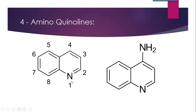According to the numbering rule, numbering starts from the heteroatom in an anti-clockwise direction: 1, 2, 3, 4, 5, 6, 7, 8. The name says '4-amino', meaning that at the fourth position of the quinoline ring there will be a substituent called amino — that is NH2. This complete structure is called 4-aminoquinoline.